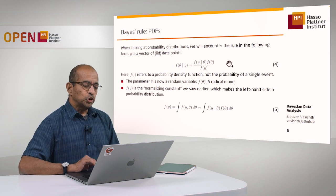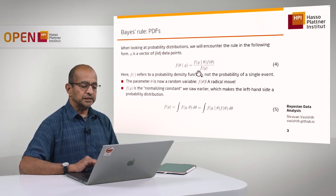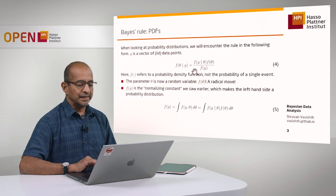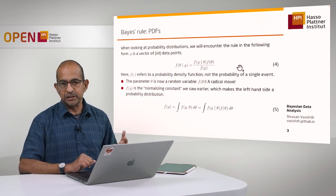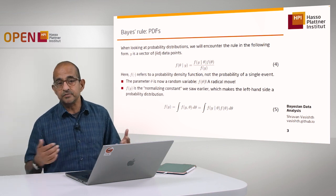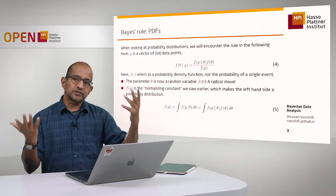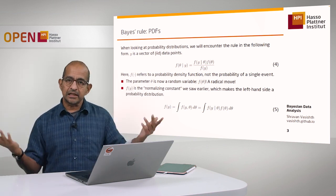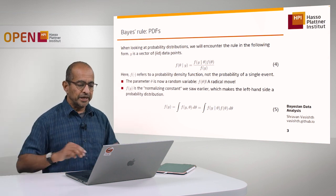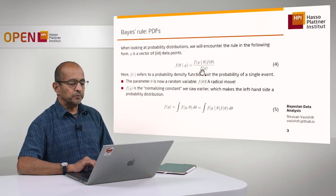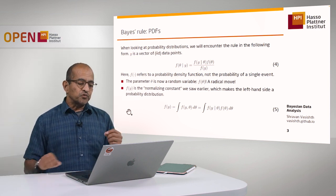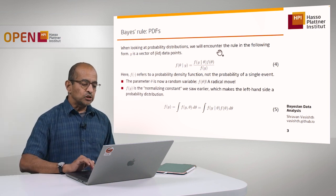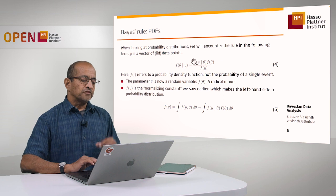The other important thing to look at in this equation is the denominator: F of Y. What is Y? Y is whatever data we have — for example, it could be reading times, the number of successes in 10 coin tosses, and so on. So what does F of Y mean? Look at the left-hand side of this equation: it's giving you the probability density function of the parameter theta given your observed data.